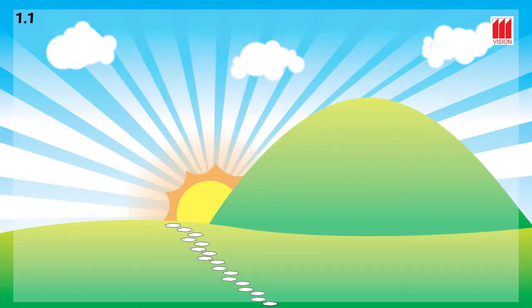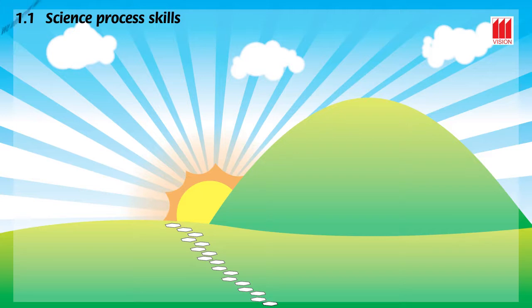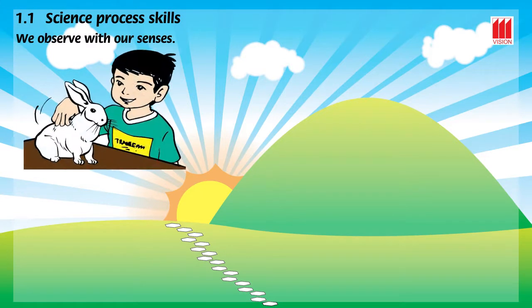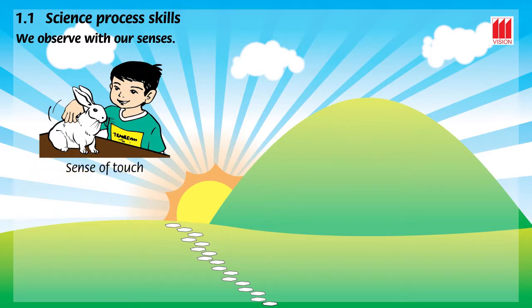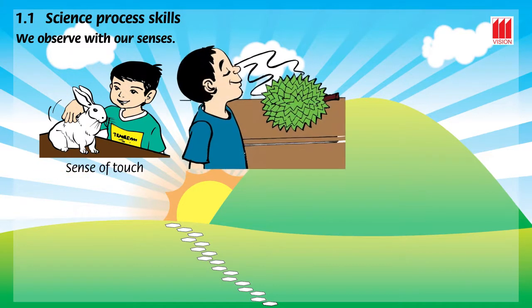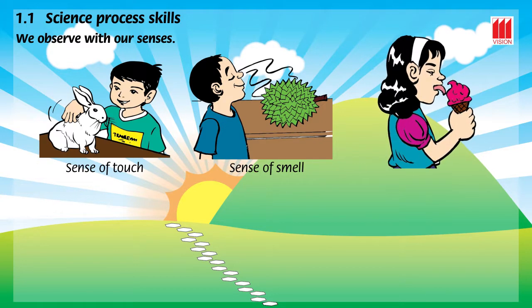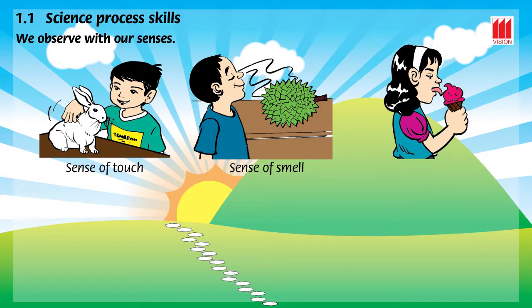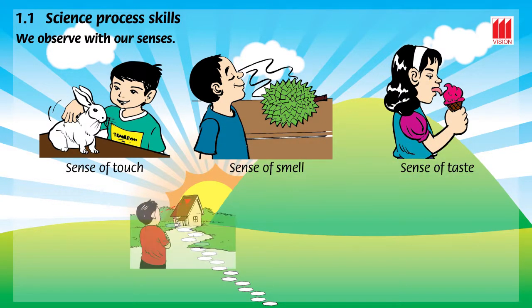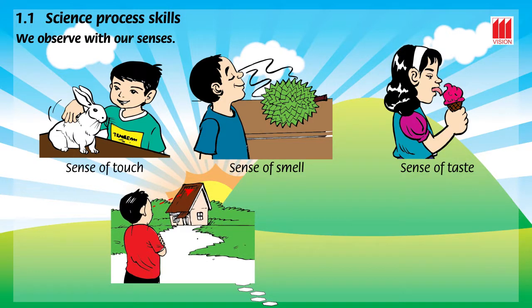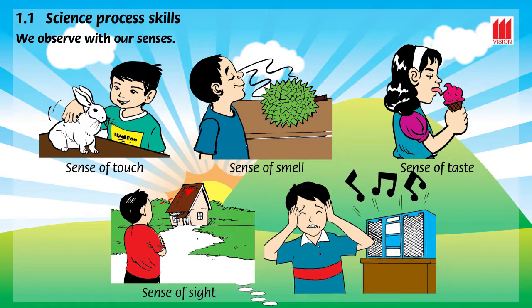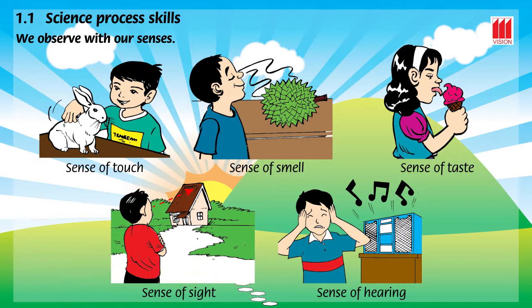1.1 Science Process Skills. We observe with our senses: sense of touch, sense of smell, sense of taste, sense of sight, and sense of hearing.